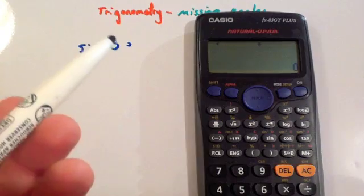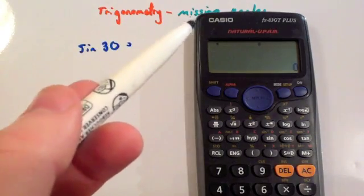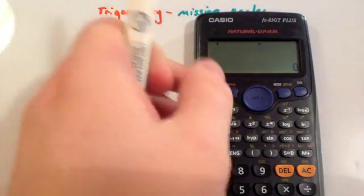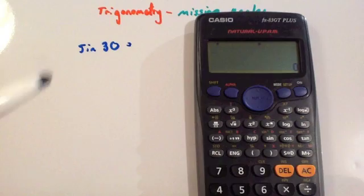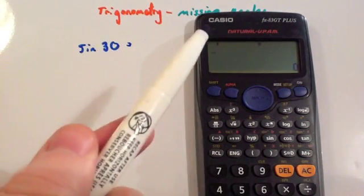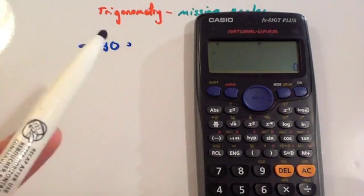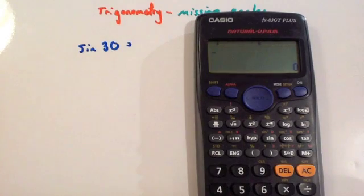In this video we're going to be looking at trigonometry and working out missing angles of right angle triangles. Before watching this video, I'd recommend watching two of our other videos: Trigonometry Introduction and Trigonometry Missing Sides. When you watch those two, you'll be ready for this video.